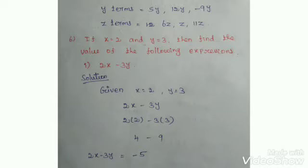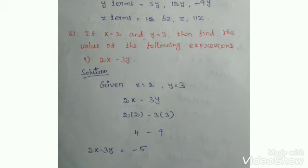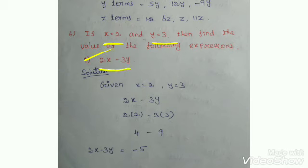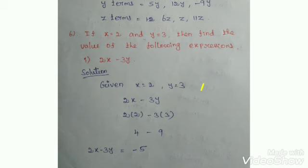Sixth question: If X equals 2 and Y equals 3, find the value of the following expression. First: 2X minus 3Y. Substitute X equals 2 and Y equals 3: 2 into 2 minus 3 into 3, which is 4 minus 9. Since 9 is the biggest number, the result is minus 5.